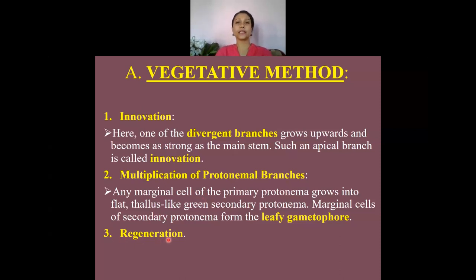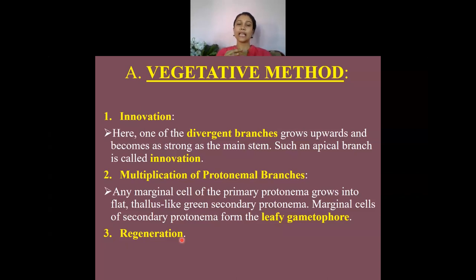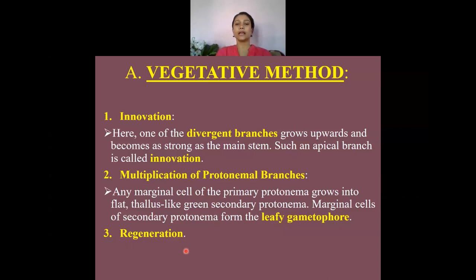The third method is regeneration, which is the capacity of tissue or cells to regrow after injury or heavy damage. Sphagnum has a strong power of regeneration. Under adverse environmental conditions with less water, the plant restricts physiological activities like respiration and photosynthesis, but as soon as water becomes available, the tissues regrow because the protoplasm remains living, and a new gametophytic plant body is regenerated.